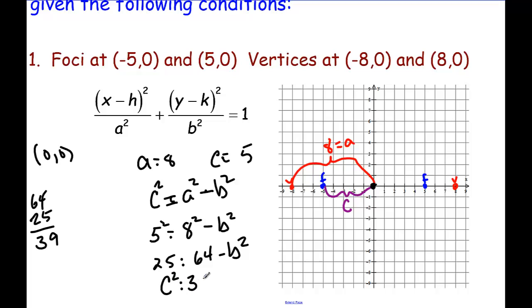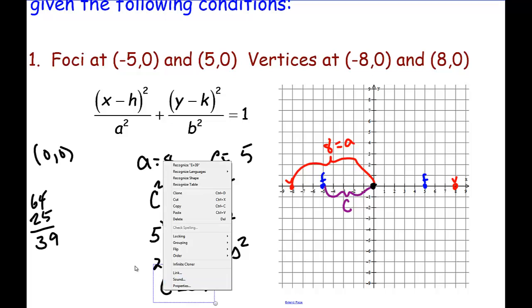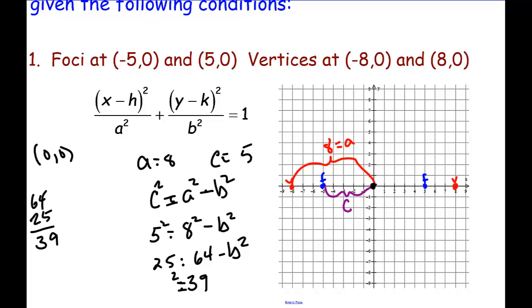Okay, so c squared is equal to 39. No, b, sorry, I apologize. Wow, b squared. All right, b squared is 39.